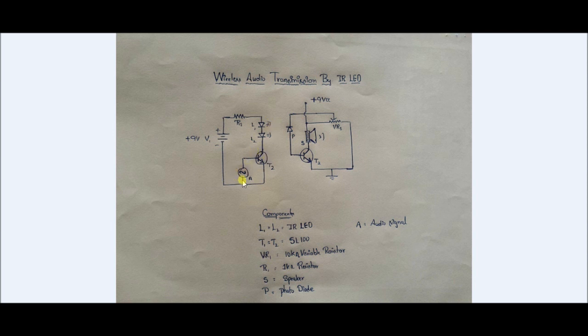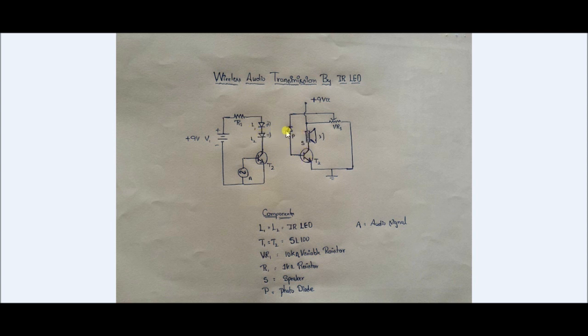As the audio signal varies, the brightness of the IR LEDs also changes, and this is sensed by a photodiode. When light falls on the photodiode, its resistance reduces — similar to an LDR but sensitive to IR rays. As the photodiode resistance reduces, more current flows, which changes the BJT resistance accordingly. This recreates the audio signal at the output, which is then played by a speaker.